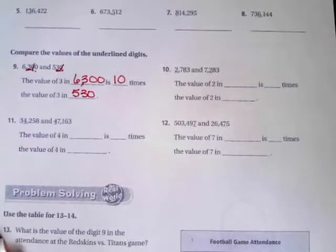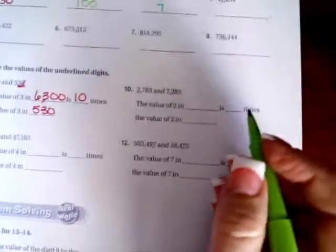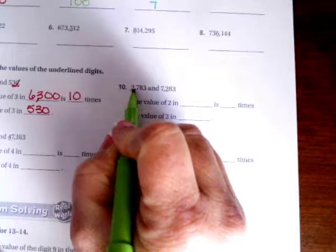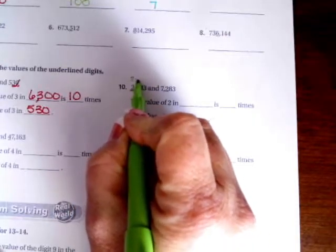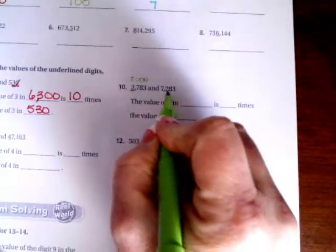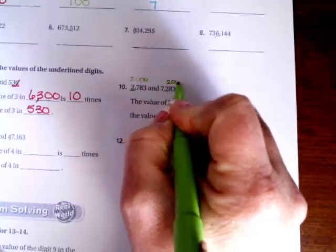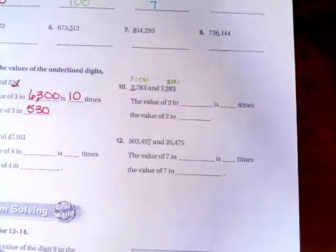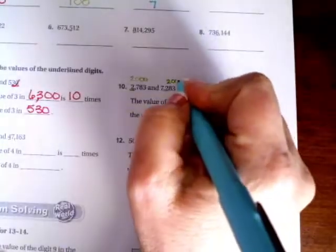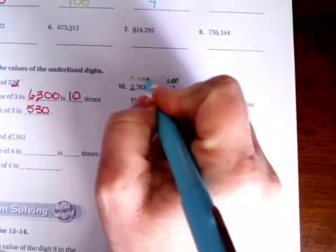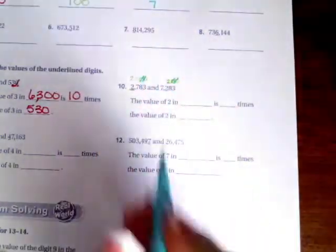We're going to do number 10. The value of the two here is 2000. The value of the two here is 200. So I'm going to cross off my zeros that match. I have two zeros here. I'm going to cross off two zeros here.